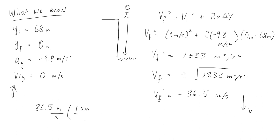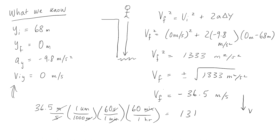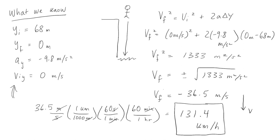Now let's convert this to kilometers per hour. What we find is that the person would hit the water with a speed of 131.4 kilometers per hour. That's a bit too fast for me, so I would not be jumping from this cliff — but I thought this was a pretty cool example of physics in the real world.